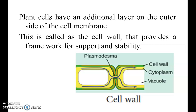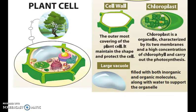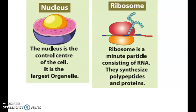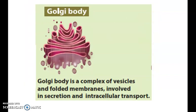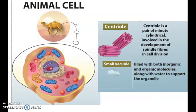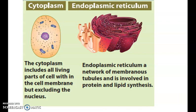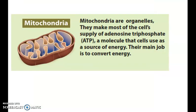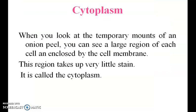Plant cells have an outer cell wall, while animal cells have only a cell membrane. In the diagram: the plant cell shows the cell wall, chloroplast, nucleus, ribosome, Golgi body, cell membrane, and endoplasmic reticulum. The animal cell shows the centriole, small vacuole, endoplasmic reticulum, and mitochondria, along with cytoplasm.